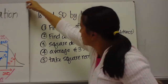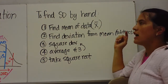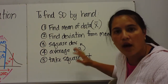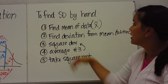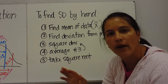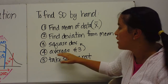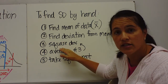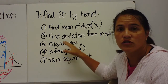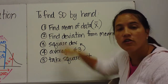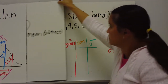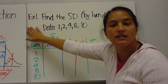Here are the steps to find standard deviation by hand. First, find the mean of the data. Second, find the deviation from the mean — subtract to find how far each value is from the mean. Third, square those deviations. Fourth, take the average of all those squares. Fifth, take the square root to undo the squaring done in step three.